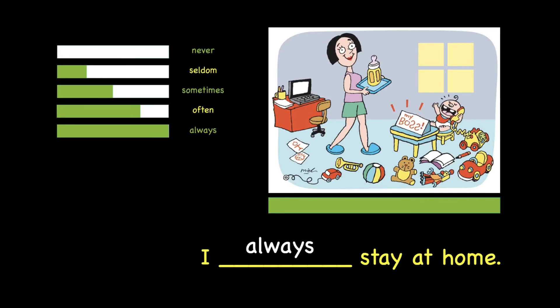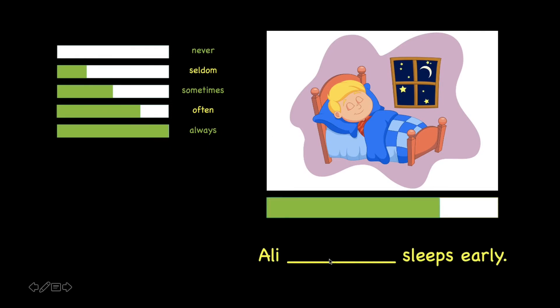Let's take a look at the second example. Ali blank sleeps early. Look at the bar. Which word should we use? Should we use never? Seldom? Sometimes? Often? Or always? Correct. The answer is often. Ali often sleeps early.